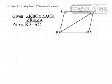So let's practice with Problem 1, Proving Parts of Triangles Congruent. In Problem 1, we're given that angle KBC is congruent to angle ACB, and that angle K is congruent to angle A. And we're trying to prove that segment KB is congruent to segment AC.